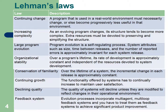The law of conservation of familiarity states that over the lifetime of a system, the incremental change in each release is approximately constant. The law of continuing growth states that the functionality of a system has to continually increase to maintain user satisfaction. The law of declining quality states that a system will decline unless it is modified to reflect changes in its operational environment.